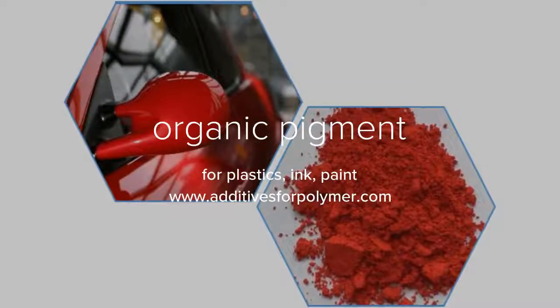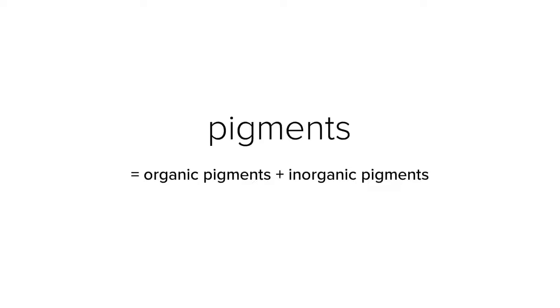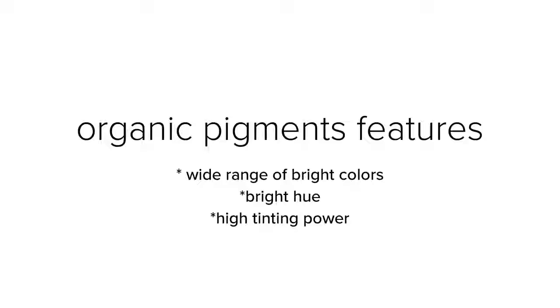Pigments and dyes are the two major color groups. Pigments contain organic and inorganic groups. Organic pigments have a wide range of bright colors, bright hue, and high tinting power.